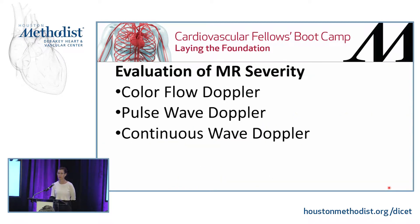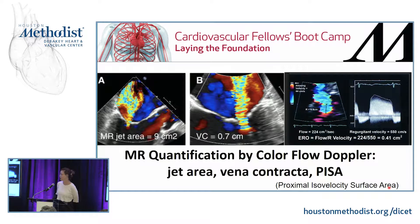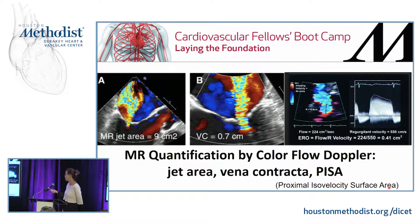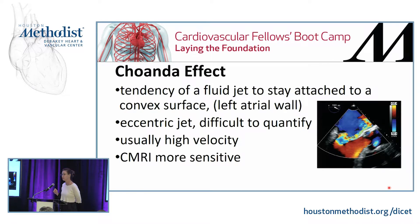There are several ways to evaluate the severity of MR. You can use color flow Doppler, pulse wave Doppler, or continuous wave Doppler, but it's important to remember that MR is dynamic. With color flow Doppler, you can trace the jet area and compare it to the area of the left atrium, use a vena contracta, or use PISA — the proximal isovelocity surface area — using the ERO, or effective regurgitant orifice. It's also important to mention the Coanda effect, which is a fluid dynamic principle where a jet tends to stay attached to a convex surface.